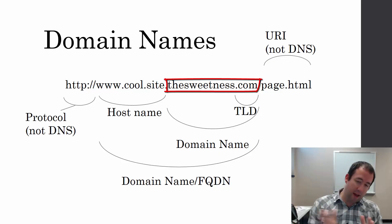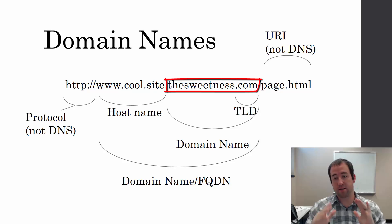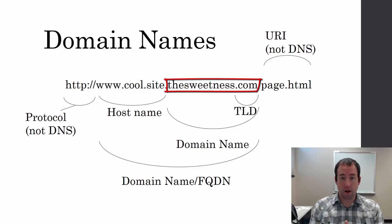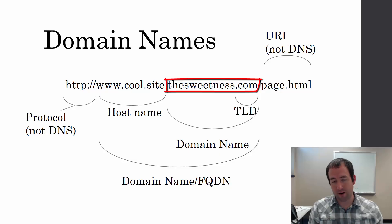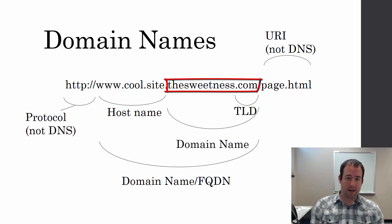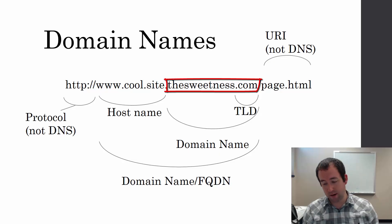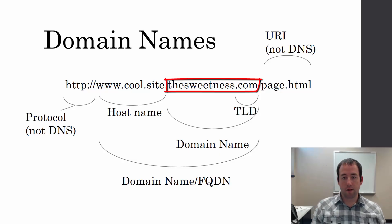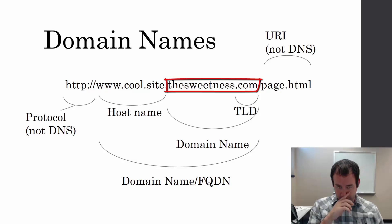Before .com there's 'thesweetness' — thesweetness.com is the domain name I would have purchased from a domain name registrar. If I wanted thesweetness.com, I'd go to GoDaddy, or 1-and-1.com, or namecheap.com, and say I want thesweetness.com. I would pay them $10 per year to register that domain.